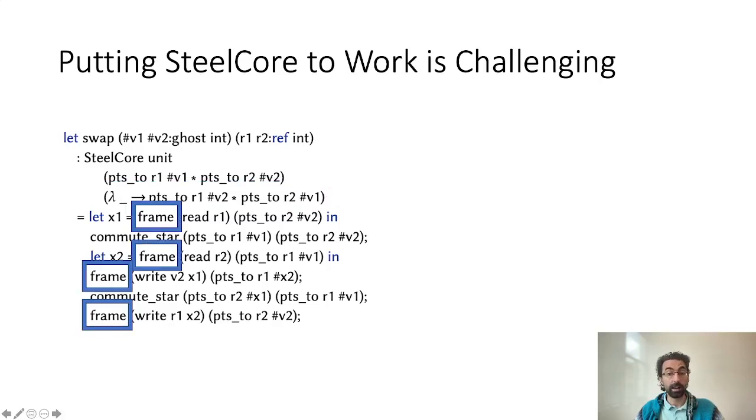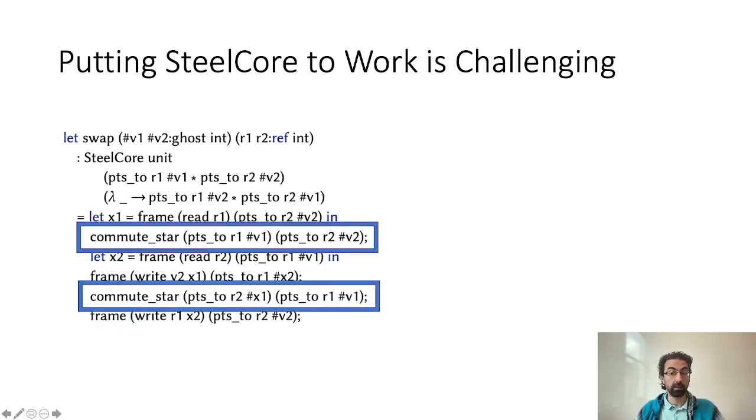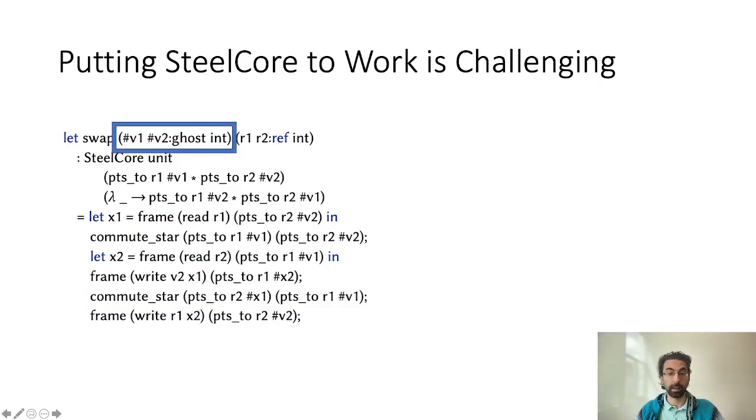First, doing this directly in SteelCore requires explicit applications of the separation logic framing at each function call. Second, it requires explicit separation logic reasoning, for instance applying associative commutative rewritings to a separation logic context through calls to the lemma commute_star. Lastly, despite SteelCore having support for implicit dynamic frames reasoning, they interact very badly with FSTAR's SMT-based automation. We didn't manage to use them even on this simple swap program, which forces us to use additional ghost variables V1 and V2 passed as arguments.